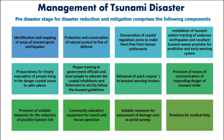Now, how can we manage the tsunami? In any disaster, we have three stages: pre-disaster, during the disaster, and post-disaster. In the pre-disaster stage, activities focus on preparedness, mitigation, and prevention. First is identification and mapping of areas prone to tsunamigenic earthquakes, so we avoid settlements or agriculture in those zones.